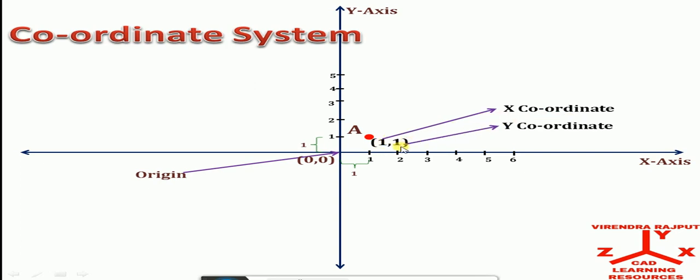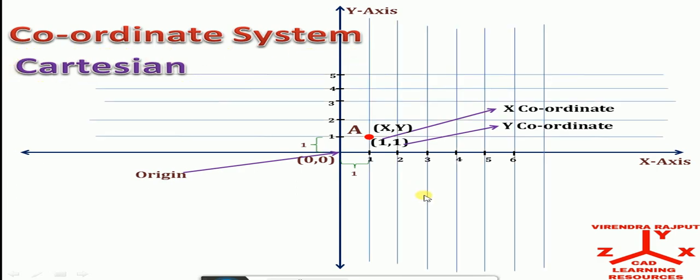1 is x-coordinate and this 1 is y-coordinate. Both the coordinates are separated by comma. So this method of specifying point in space is known as Cartesian coordinate system.